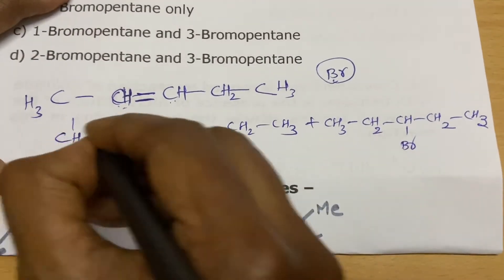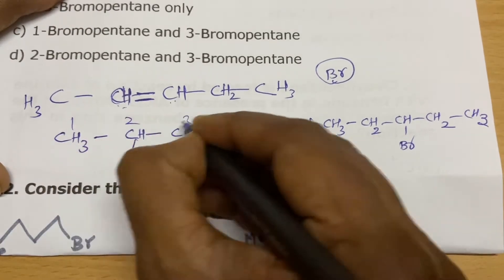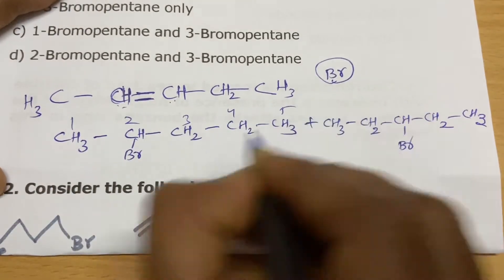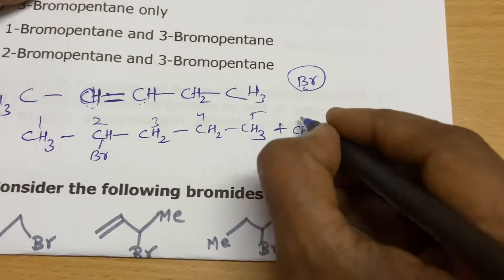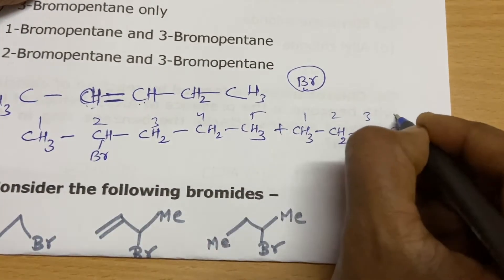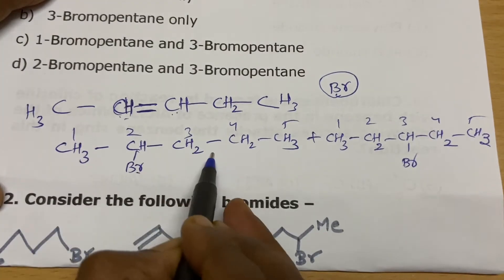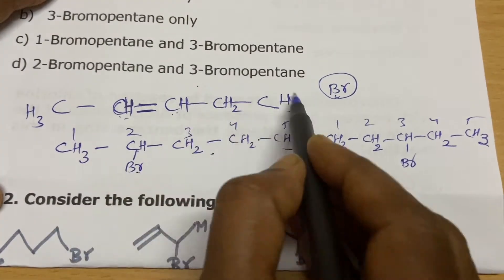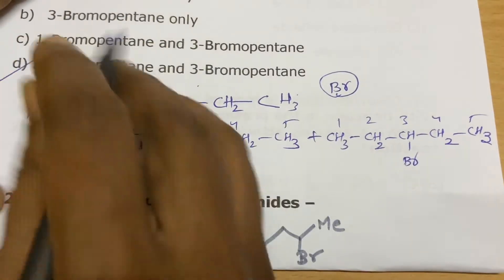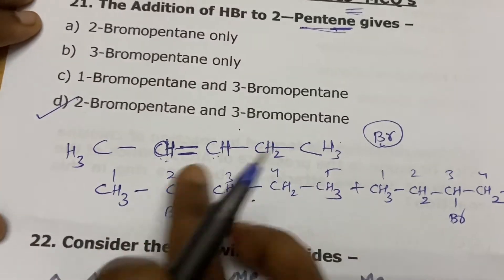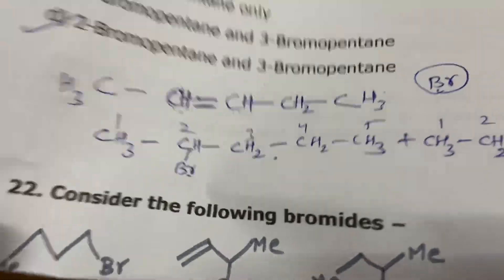Bromine adds to either carbon, giving products named 2-bromopentane and 3-bromopentane. You will get a mixture of these compounds in equal proportion because there is no differentiation between the two carbons.